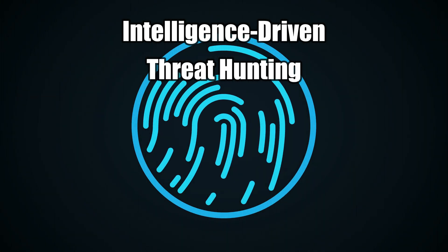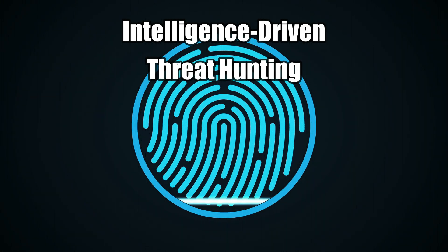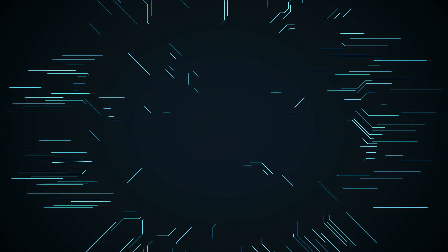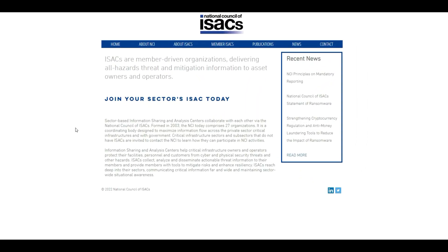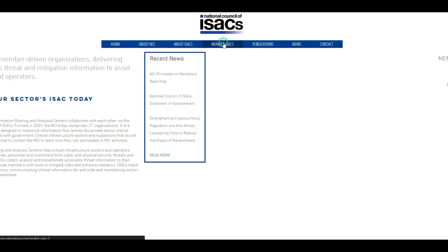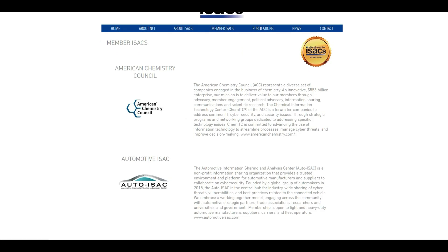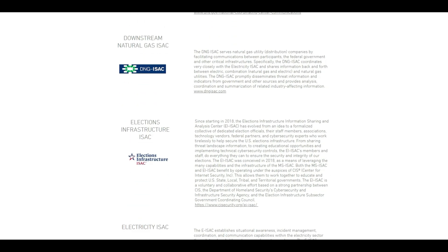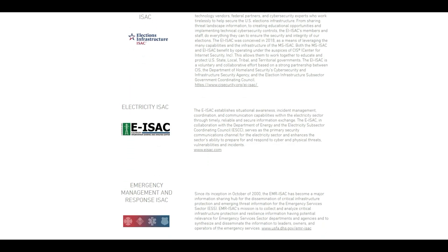Another type, which relates more to structured threat hunting, is intelligence-driven threat hunting. This is the search for known threats, where a threat hunter will take information from intelligence reporting and various feeds. One organization known as ISAC, or the Information Sharing and Analysis Center, provides central resources for gathering information on cyber threats. They have various industry-specific ISACs for things like healthcare, financial services, and aviation. The downside to this model is that a team may spend more time hunting for threats that don't have an impact on the organization.